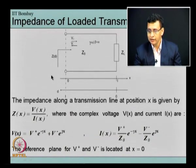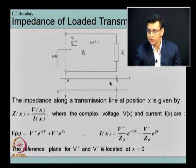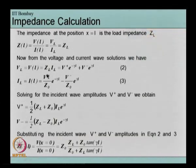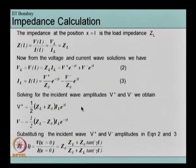Since the load at the load end provides a more standard reference compared to the source, we should start thinking of distances from the load end instead of the source end. That is why we introduced another reference plane d which moves in the opposite direction compared to x. By doing a coordinate transformation from x to d, we get these equations, and if the variable distance along d is called l we get these equations.